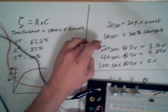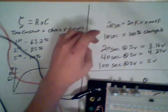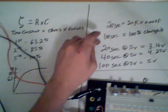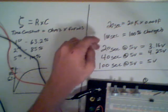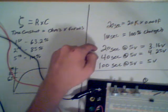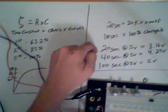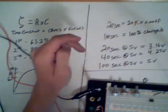And our voltages will be at 20 seconds at the 5 volts from the power supply. We'll have 3.16 volts, at 40 seconds we'll have 4.25 volts, and at 100 seconds we should have 5 volts.